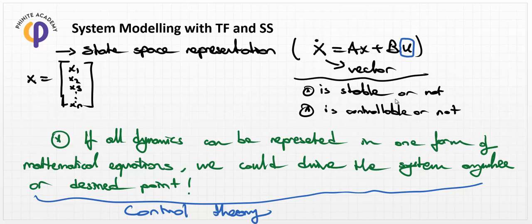In summary, to design a mechatronic system, we first create the equations of motion for the electrical, mechanical, or thermal system, then convert everything into transfer function and state-space representation. Using control theory, we can then track any desired point by selecting the appropriate input variable u. In the next lesson, we will discuss how to select this input variable and the types of input variable selection methods.